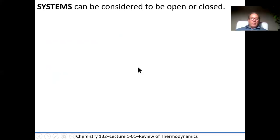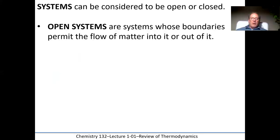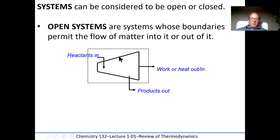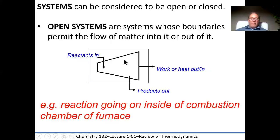Systems can be considered to be open or closed. An open system is one whose boundaries permit the flow of matter into and out of the system. For example, a furnace where reactants in the form of natural gas are burned, and we remove the products of combustion — mostly carbon dioxide and water, possibly some carbon monoxide from incomplete combustion. A fan blows air over that combustion chamber to carry out the heat.